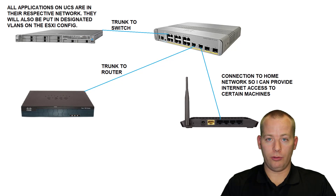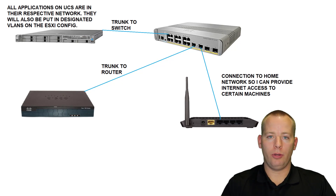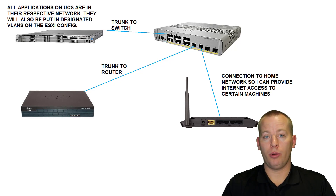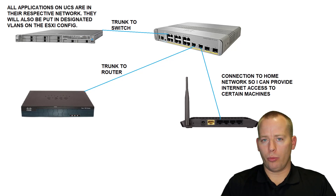There will be a trunk from the UCS into the switch, but there will also be a trunk from the switch into the small router so that I can do router-on-a-stick and handle my inter-VLAN routing there. I'll also have a connection going over to my home router so that some of my applications can have actual internet access, allowing me to remain on my home network and RDP into my workstations — like my Windows workstation or Windows server — or use something like TeamViewer to access the lab remotely from a hotel or wherever I might be.